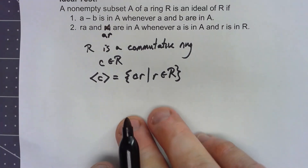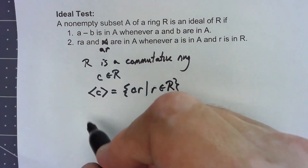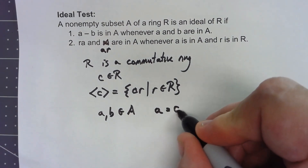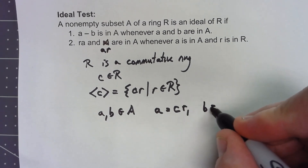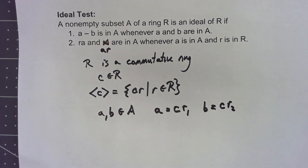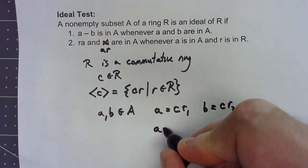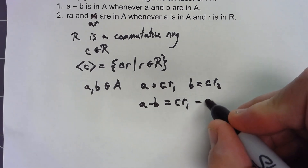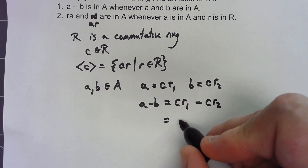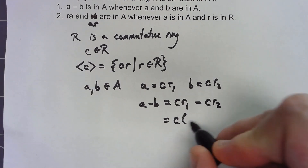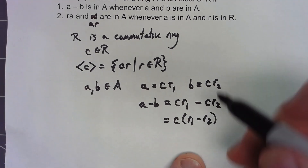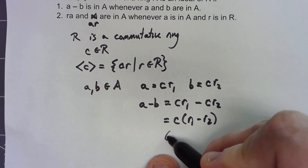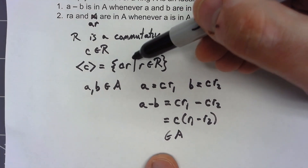Let's check the first property. Say A and B are in ⟨C⟩, so A equals C times R1 and B equals C times R2. Then A minus B equals CR1 minus CR2, which by the distributive property equals C(R1 minus R2). Because we have a ring, R1 minus R2 has to be in the ring, therefore this has to be in ⟨C⟩, since ⟨C⟩ consists of anything of the form C times a ring element.